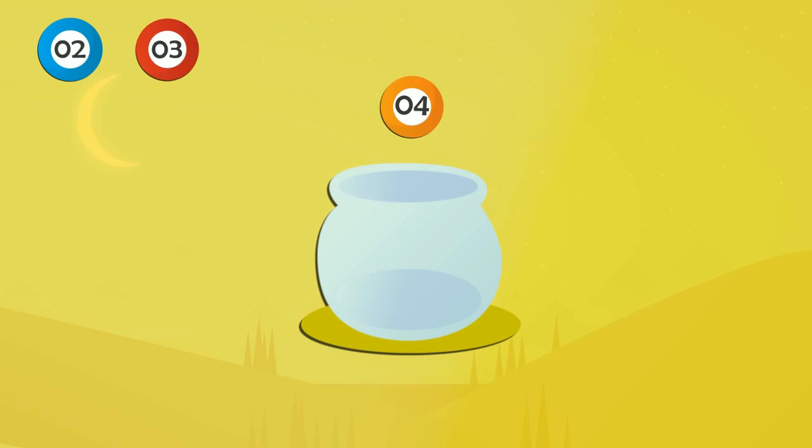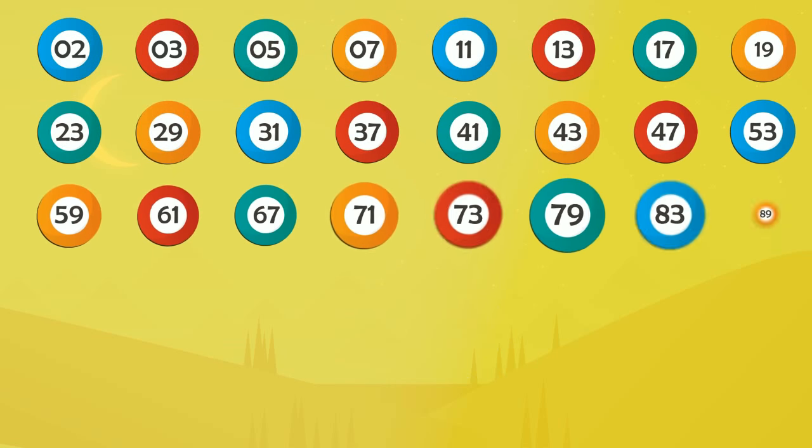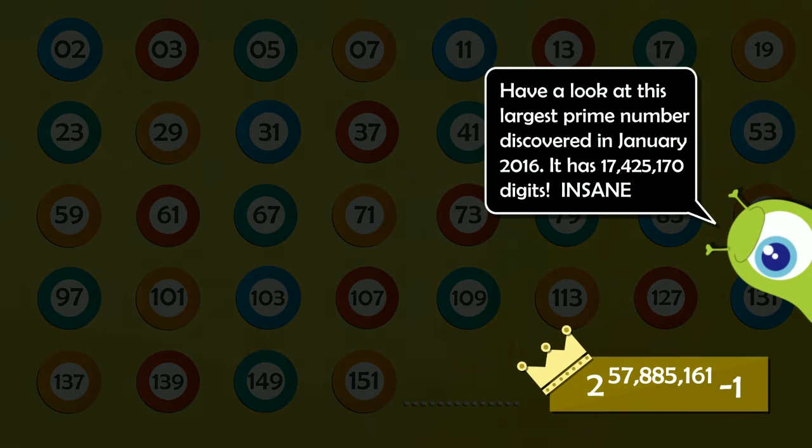Now we can write 4 as 4 times 1 and also it can be written as 2 times 2. It has 3 factors. So it is not a prime number. If we keep on going, we will get loads and loads of prime numbers. Interesting.